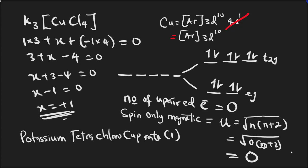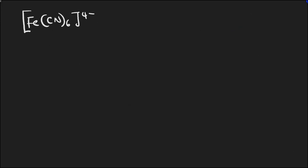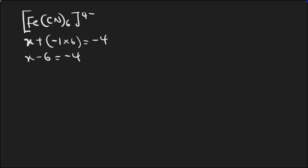Now the last complex — it is a negative ion. Since the entire system is a negative ion, the central metal will carry a Latin name ending with '-ate.' Let's calculate the oxidation state: x + cyanide (−1 times 6) = charge of complex (−4). So x − 6 = −4, giving x = −4 + 6 = +2. That's the oxidation state of the central metal.